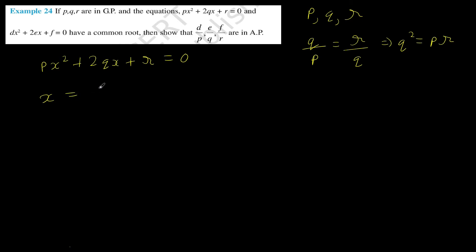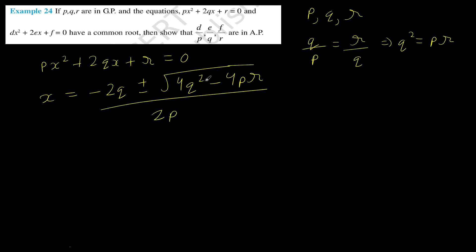From the quadratic formula, X equals minus B plus or minus root of (B squared minus 4AC) divided by 2A. Using Q squared equals PR, the discriminant becomes 4Q squared minus 4PR equals 4PR minus 4PR equals 0. So there is only one root, which is minus Q by P. Since the two equations have a common root, this root must satisfy the second equation as well.